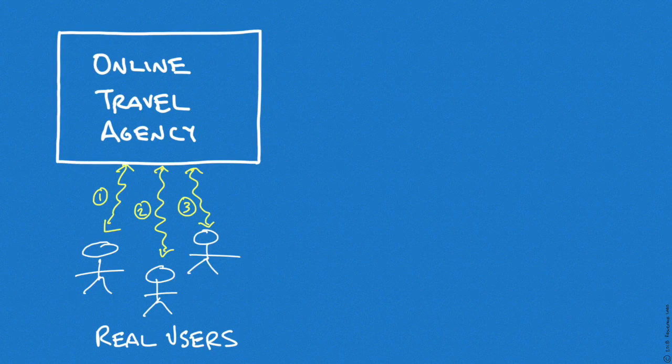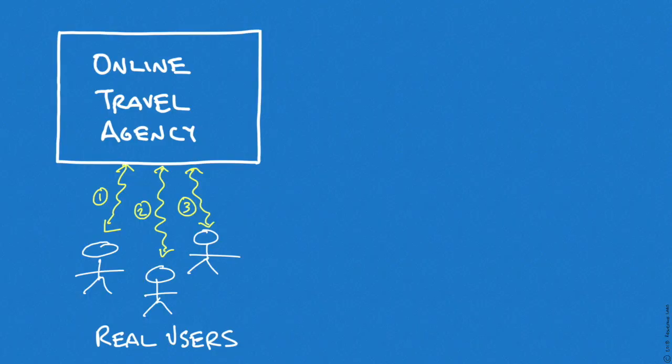Another way to define usage logging is with a real example. This story begins with a travel agency that is selling airline tickets online. One day, the accounting department realizes in a panic that invalid orders are being processed — some, but not all, airline tickets are being sold at very low prices. So the challenge is to figure out why this problem is going on, and of course this falls to the DevOps team to triage.